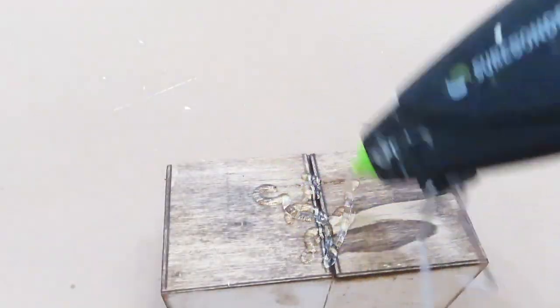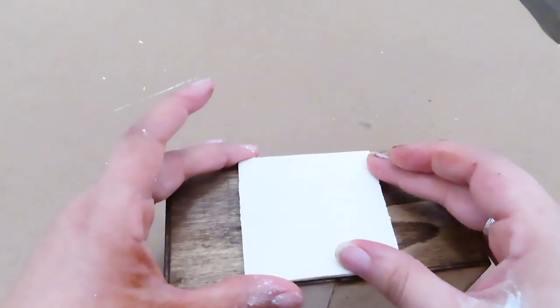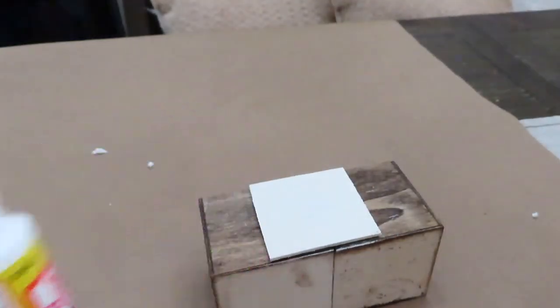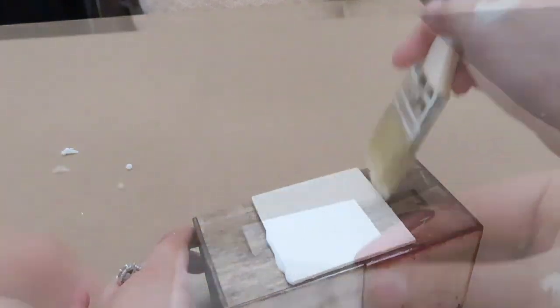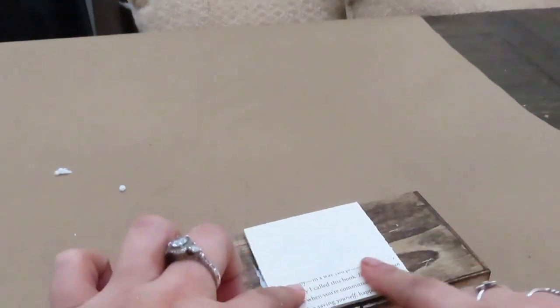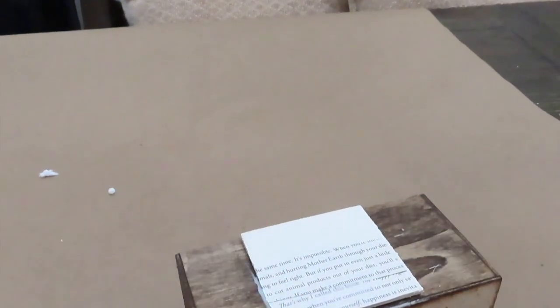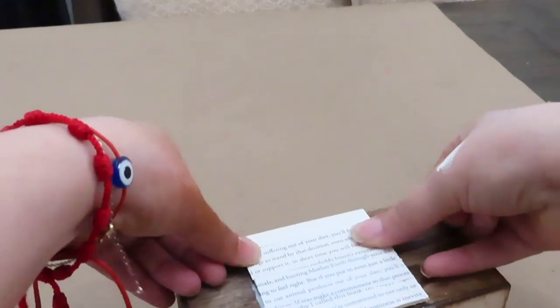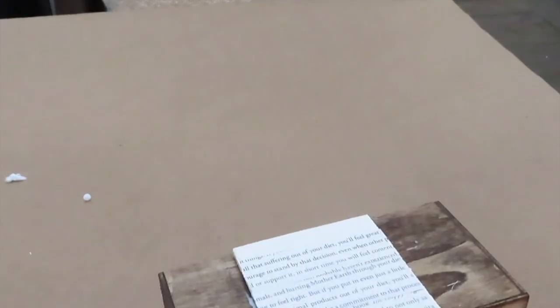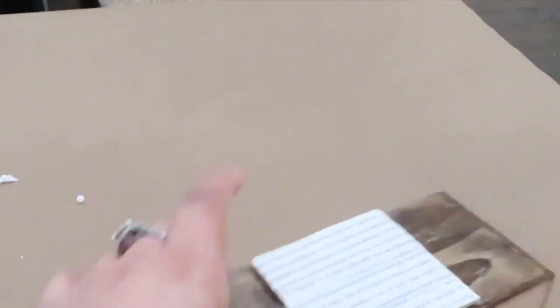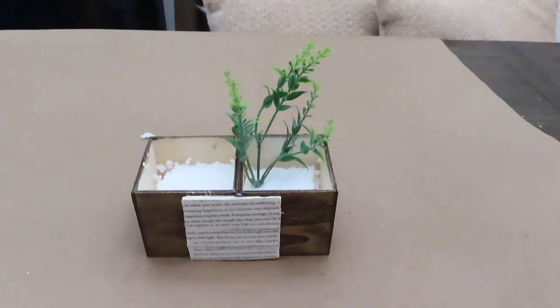So it wouldn't look too plain, I added a piece of wood onto the center. With the mod podge, I'm going to be placing some scraps of paper that came from a book I had around the house just to give some detail. Now I'm just gonna fill it up with some greenery and roses.